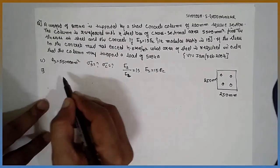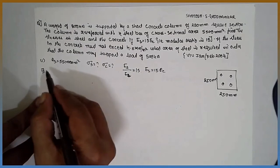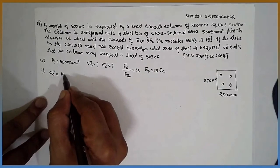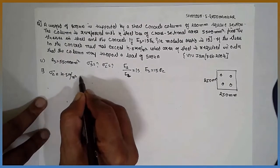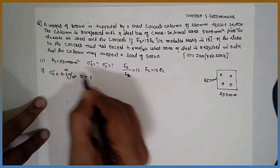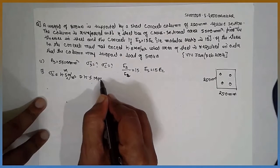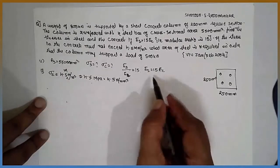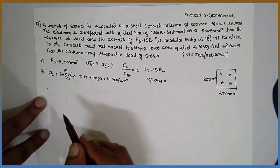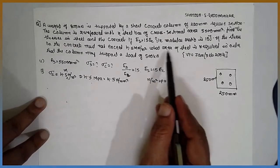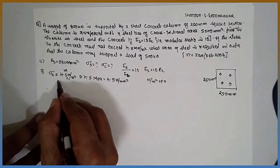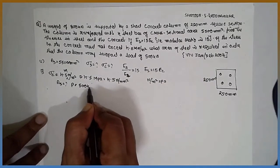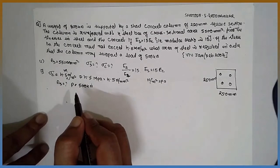This is the first data. In the second part, we have to find out the area of steel. The stress in the concrete is 4.5 MN/m², which is 4.5 MPa — that is 4.5 N/mm², since 1 MPa equals 1 N/mm². The load given for the second part is 500 kN, while for the first part it is 300 kN.